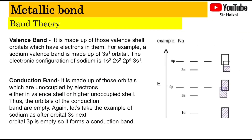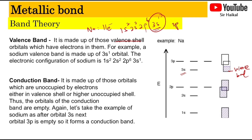The valence band is basically made up of the valence shell. For example, sodium metal has 11 electrons, with the electronic configuration 1s², 2s², 2p⁶, and 3s¹. The valence electron is at the 3s orbital, so 3s becomes the valence band. After 3s, we have 3p, but 3p is empty — it is unoccupied — and therefore this 3p orbital becomes the conduction band. Since the energy gap between the valence band and the conduction band is very, very small, they overlap, and electrons can move freely from the valence band into the conduction band, allowing sodium to conduct electricity.